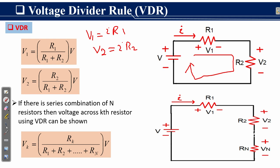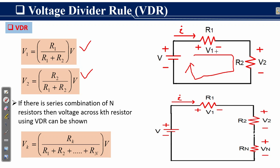You can see that you need two or three steps to find V1 and V2. But using the voltage divider rule, you can use just two formulas. According to the voltage divider rule, V1 equals R1 over R1 plus R2, multiplied by the applied voltage V, and V2 equals R2 over R1 plus R2, multiplied by the applied voltage V.